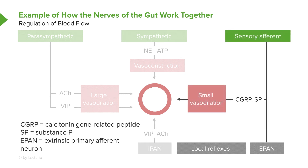The last way is something that's more conscious in nature. These particular neurons secrete calcitonin gene-related peptide and substance P to cause a small amount of vasodilation. So acetylcholine and vasoactive intestinal peptide cause large vasodilation, while calcitonin gene-related peptide and substance P cause a small amount of vasodilation.